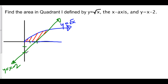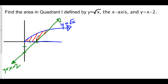We could do that and then later subtract off the area of this triangle — that's perfectly acceptable. Or, what we could do is take the integral from 0 to 2, where our line crosses the x-axis, and then take the integral from 2 to wherever these two functions intersect. That seems like a more feasible thing to do.